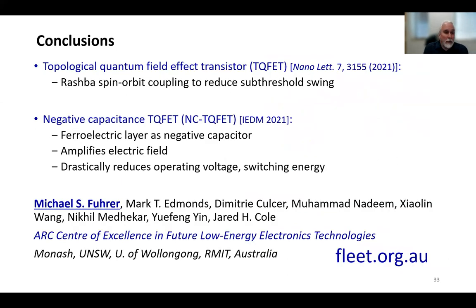So to conclude, I've shown you the topological quantum field effect transistor. This is published here in Nanoletters, where Rashba spin-orbit coupling acts to reduce subthreshold swing compared to a conventional transistor. And coupling that device to a negative capacitor using a ferroelectric can amplify the electric field and drastically reduce the operating voltage and the switching energy in such a device. So I've listed my collaborators again. I'll remind you that I'm from the FLEET Center of Excellence, and you can visit us at fleet.org.au to find out more. And thank you for your attention.